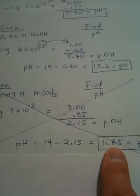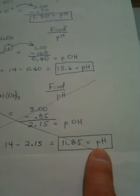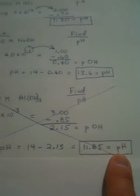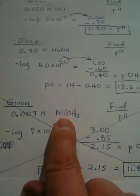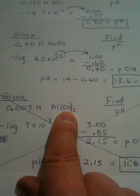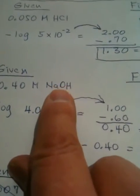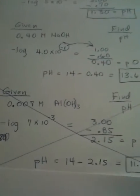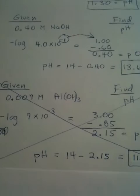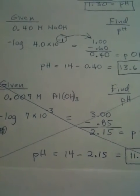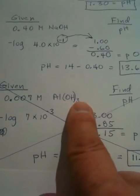Subtract it from 14, and we get 11.85. And, that would be the pH, with one little problem. Each aluminum hydroxide gives us three hydroxides instead of the one that we got with sodium hydroxide. And, since any metal with a hydroxide ion hooked to it is considered a strong base, that would have been okay, except that there's three of them.